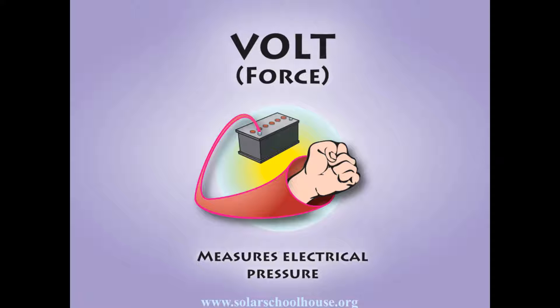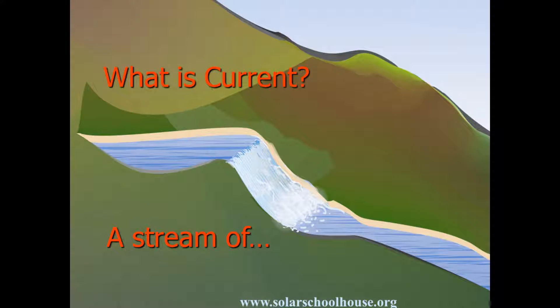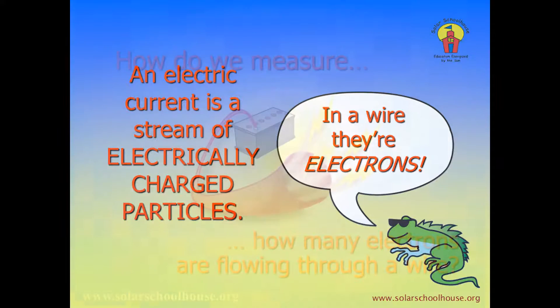We now know that voltage pushes current, but what exactly is this current we're talking about? It's similar to the current in a river — the current of water — and that current is a stream of many, many drops of water. An electrical current is a stream of many, many particles of electricity. These particles are called electrons.